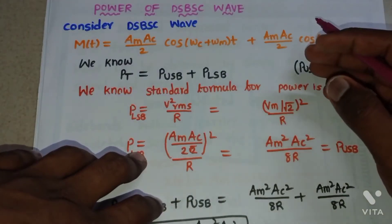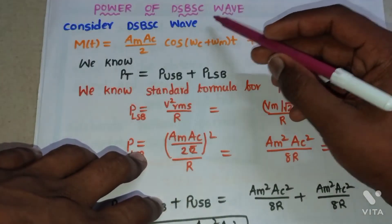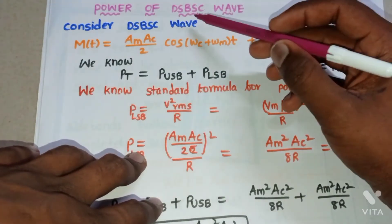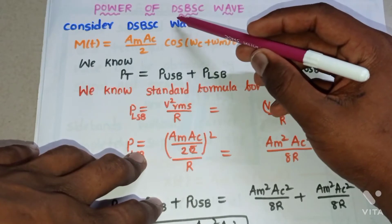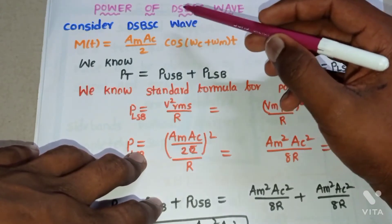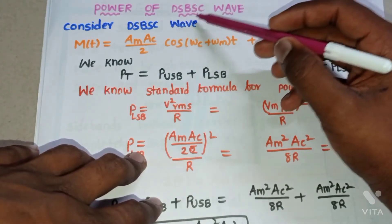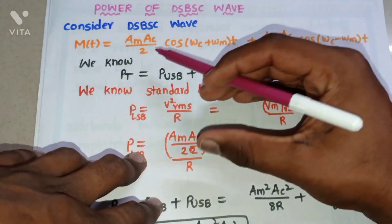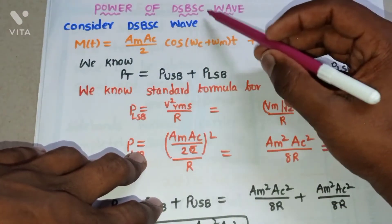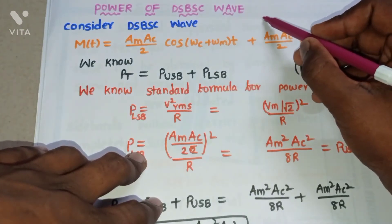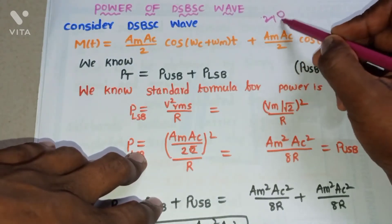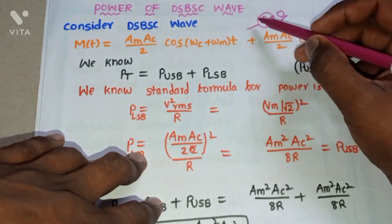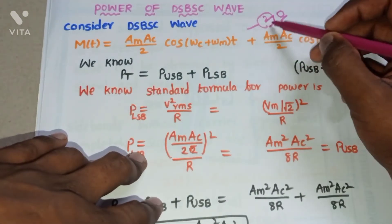Here we are going to find the power of the DSBSC wave. In the DSBSC wave we have two sidebands and the carrier is completely suppressed, meaning there is no carrier. So the total power of the DSBSC wave is nothing but the power of these two sidebands — the upper sideband and the lower sideband.